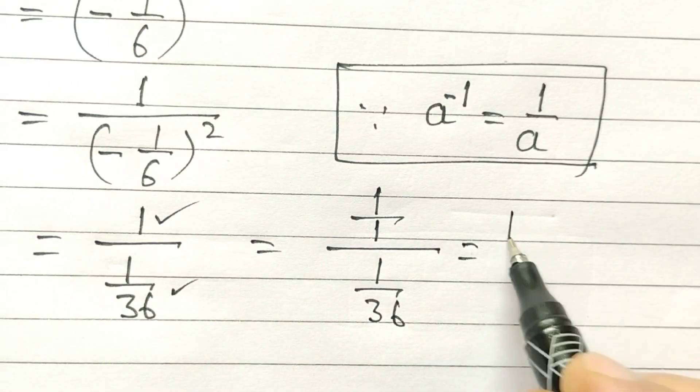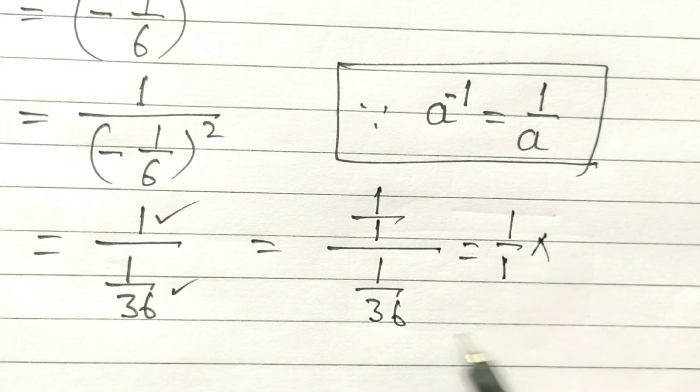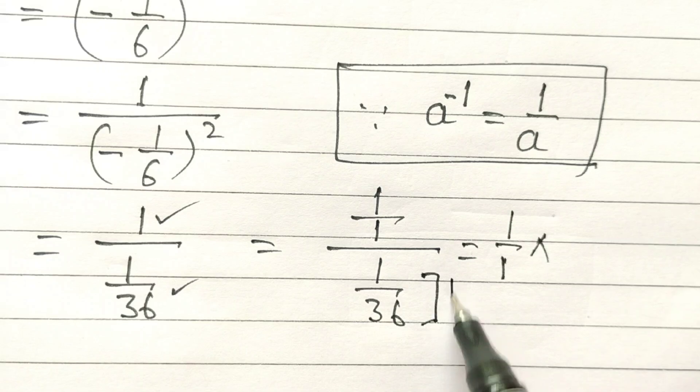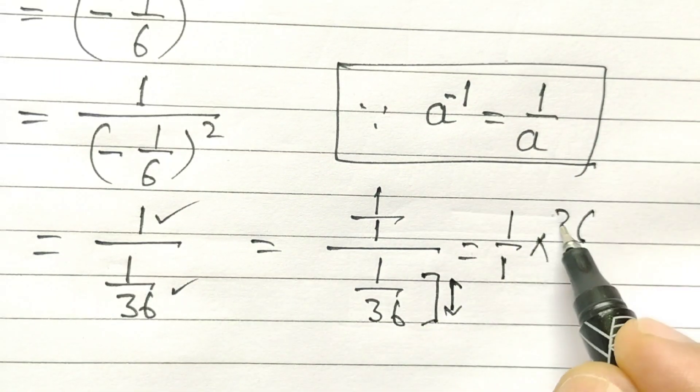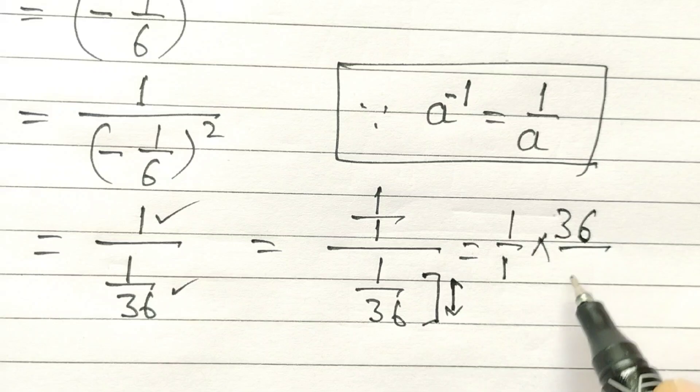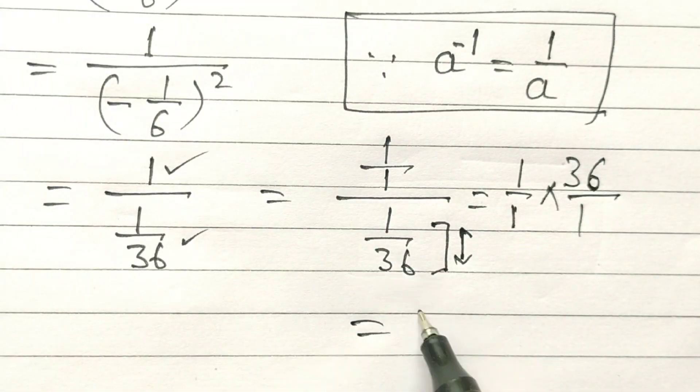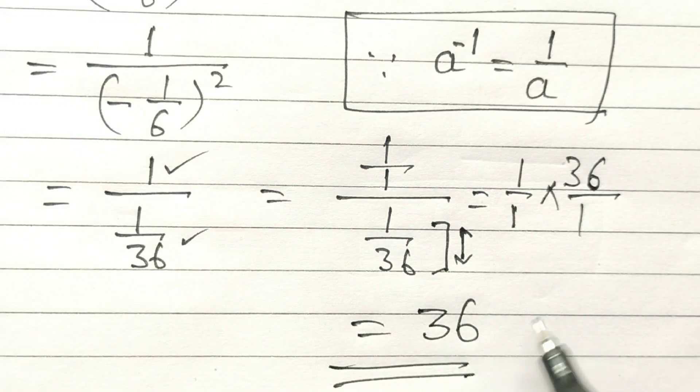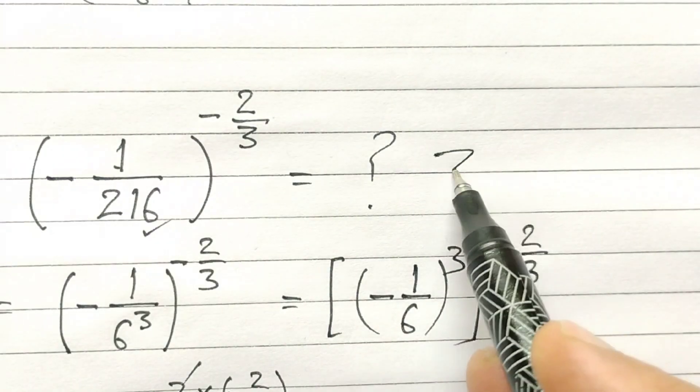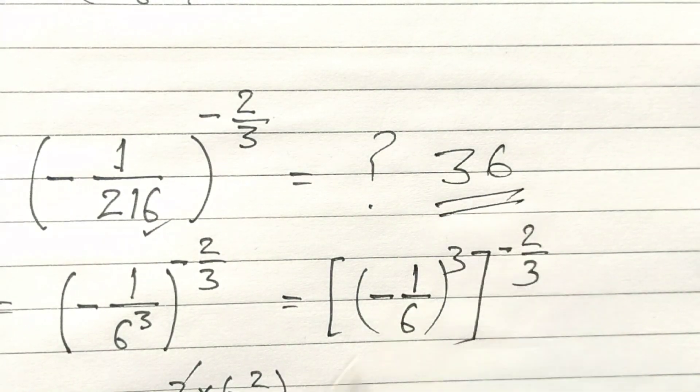1 over 1 times this fraction will get reversed, so our answer will be 36. The simplified form is 36. Okay friends, thank you.